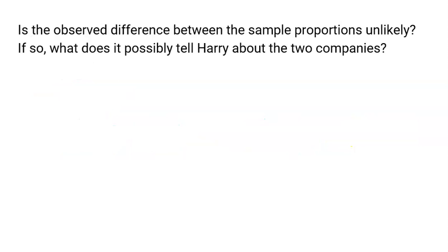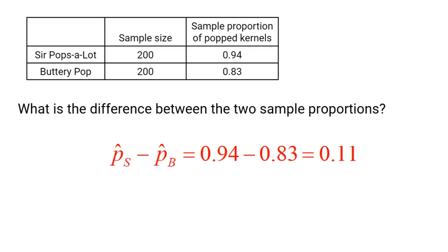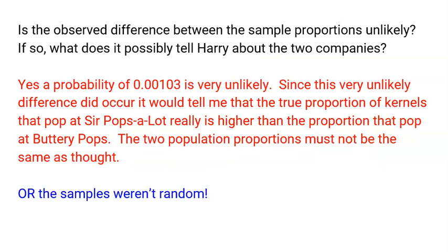So final question. Is this observed difference between the sample proportions unlikely? If so, what does it possibly tell Harry about the two companies? Well, again, this difference happened. Like he actually got 94% for Sir Pops-a-Lot, 83% for Buttery Pop, and he got this 11% difference, which we all found out was very, very unlikely. So yes, this should not happen. So what does this mean? Well, since this is a very unlikely difference, 11% difference should not have occurred based on the sampling distribution. This tells me that the proportion of kernels at Sir Pops-a-Lot that pop is higher than the proportion that pop at Buttery Pops. Like I should not have seen an 11% difference between the two sample proportions, but I did. And it's a very unlikely outcome. So it tells me that the numbers I was given are wrong. They're not both 85%. Sir Pops-a-Lot is probably higher than 85%. Buttery Pops is lower and the difference should be bigger. That's what it makes sense.